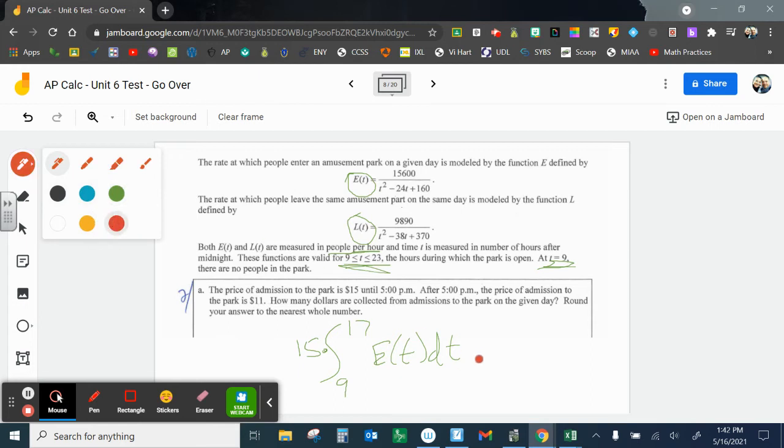Now at 5 p.m., it changes. Tickets are now $11. The total amount of people entering the park is going to be from 17, so it goes to 11 p.m. So those last six hours are represented by 17, which is 5 p.m., that's 17 hours after midnight, all the way to 23, which is 11 p.m. And again, the nice thing is they give us this function for E(T). I would just put it in the calculator. And this is the first time where, hey, this gives us the total amount of people entering from 9 a.m. to 5 p.m., but then I've got to multiply each of those by 15.